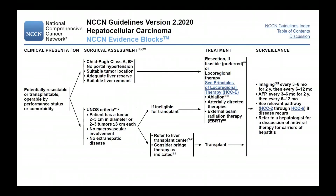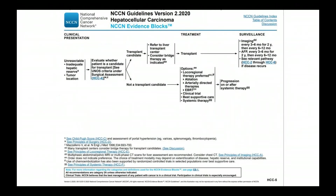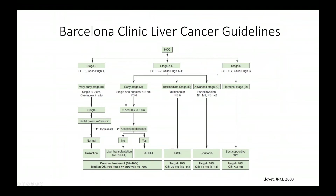Using the NCCN guidelines for the U.S., patients with hepatocellular carcinoma who are resectable or transplantable would go to one of those arms. They would get resection if they have adequate liver remnant without significant portal hypertension. If they have decreased liver function and are eligible for transplant, that would be the next option. Otherwise, they go to local regional therapy, and ablation for small tumors is the primary choice.